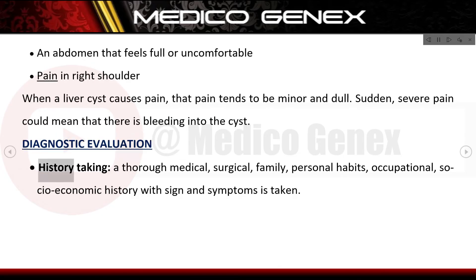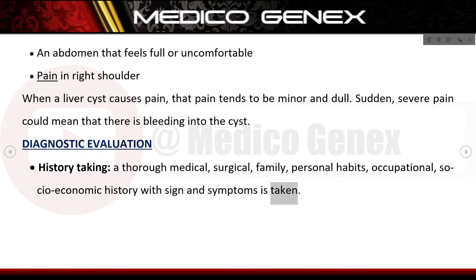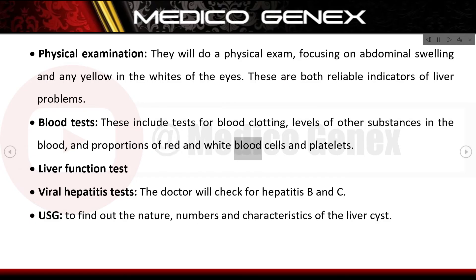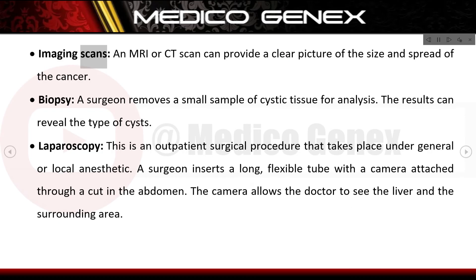Diagnostic evaluation — history and physical: a thorough medical, surgical, family, personal habits, occupational, and socioeconomic history with signs and symptoms is taken. A physical exam focuses on abdominal swelling and any yellowing of the whites of the eyes, both reliable indicators of liver problems. Blood tests include tests for blood clotting, levels of substances in the blood, and proportions of red and white blood cells and platelets. Liver function tests and viral hepatitis tests check for hepatitis B and C.